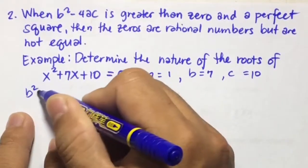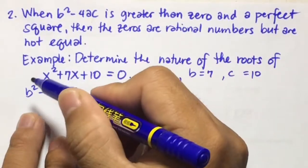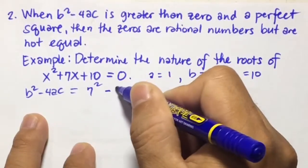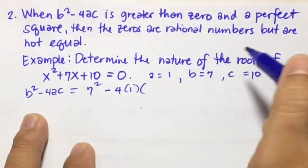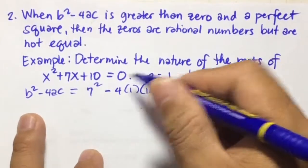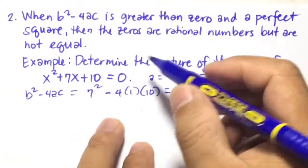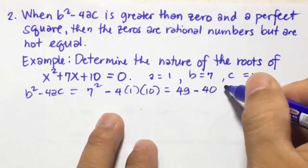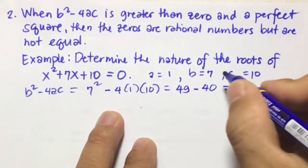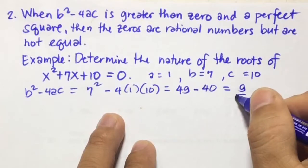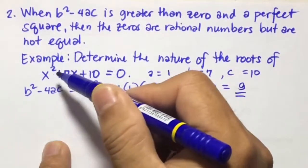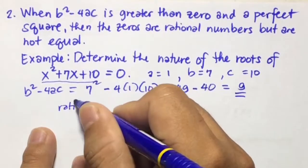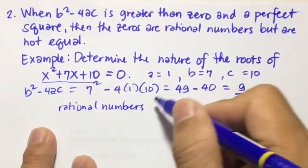Using the discriminant b squared minus 4ac, we substitute the values of a, b, and c. So we have 7 squared minus 4 times 1 times 10. 7 squared is 49, and negative 4 times 1 times 10 is negative 40. So 49 minus 40 equals 9. Since 9 is a perfect square and greater than 0, the nature of the roots of x squared plus 7x plus 10 are rational numbers but are not equal.